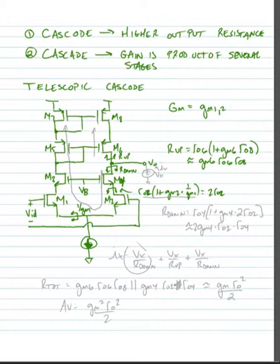So then R down sees this resistance as the R dollar sign for M4. So R down now becomes ro4 times (1 plus gm4 times 2ro2). Assuming that gm4 times 2ro2 is much bigger than 1, we can say that this is approximately equal to gm4 times 2ro2 times ro4.